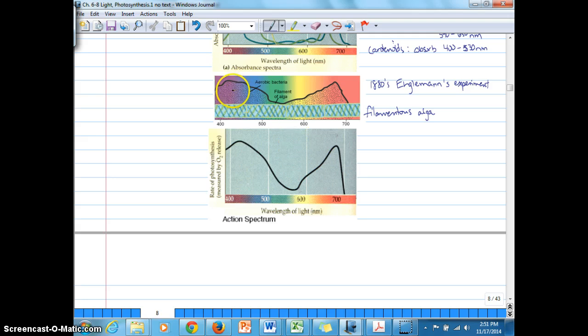All right, so we have different wavelengths of light that the filamentous alga is exposed to. Then he introduced aerobic bacteria that you see here to the solution where the filamentous alga was suspended, and watched over time how they congregated along the length of the alga. So the aerobic bacteria tended to have higher concentrations over here in the indigo and blue and violet region of the alga, and then also peak again here in concentration of population sizes around orange and red.